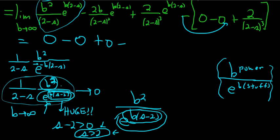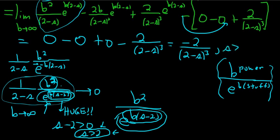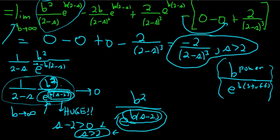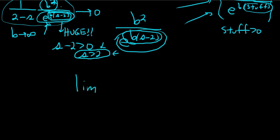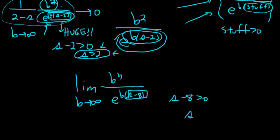So distributing the minus, we get minus 2 over (2 minus s) cubed, with s greater than 2. That is the final answer. The goal when you get to this part is to write the b-terms as a polynomial over e to the b times some stuff — in order for that limit to be zero, your exponent stuff must be positive. For example, the limit as b goes to infinity of b to the fourth over e to the b(s minus 8) goes to zero when s minus 8 is positive, so s greater than 8. I hope this video has been helpful to someone learning differential equations and Laplace transforms.